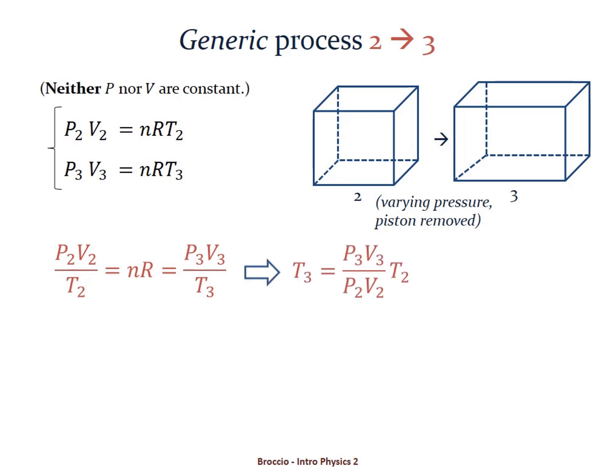Setting those two equal to each other we can solve for T3 and find P3 V3 over P2 V2 times T2.